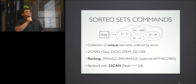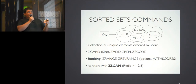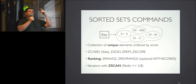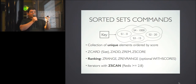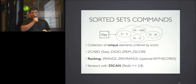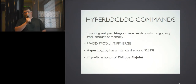My favorite structure: sorted sets. They're exactly like sets but every element has a score, and you get operations to list them ordered by score. ZRANGE gives you from lowest to highest score; ZREVRANGE gives you the leaderboard from top to bottom — most points first going down. You also have an optional parameter to include scores or just get the elements, depending on what you need. Iterators are available here as well.